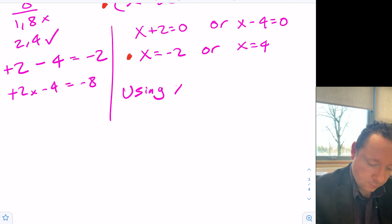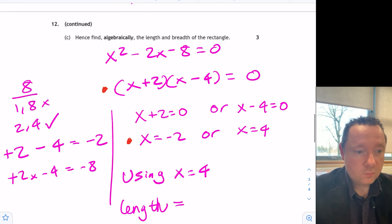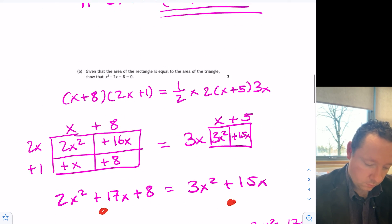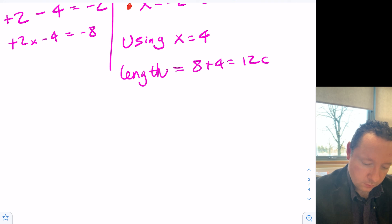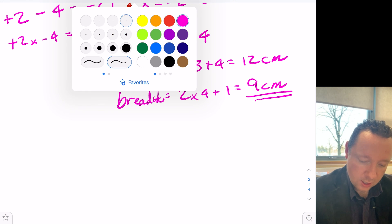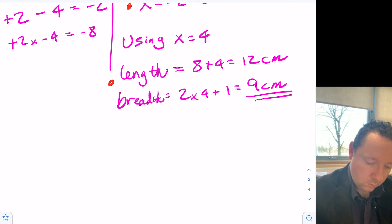So using x equal to 4, the length is equal to... So remember, back at our triangle... 8 plus 4, which is 12 centimeters of a breadth... was 2x add 1, so 2 times 4 plus 1, which is 9 centimeters. And we get our final mark for working that out.